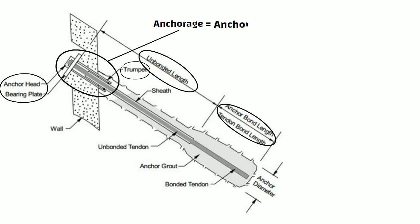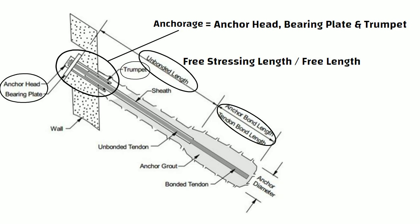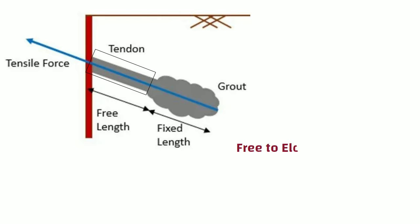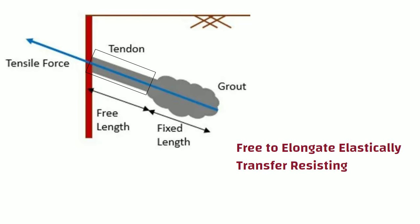The anchor edge is the combined system of anchor head, bearing plate and trumpet. The unbonded length, also known as free stressing length or free length, is the portion of rod that is free to elongate elastically and transfers the resisting force from the bond length to the structure.